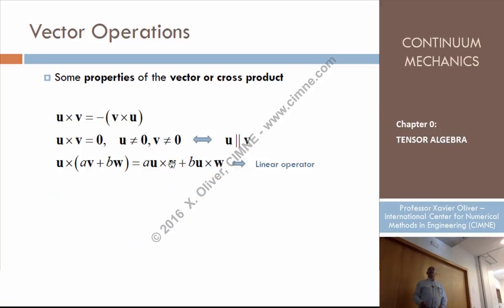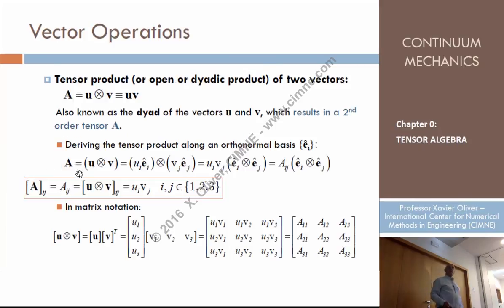Linearity is also expressed here. Whenever we have a linear expression, the vector U crossed with a vector which is a linear combination of two vectors is the linear combination of U times the first vector plus U times the second vector.